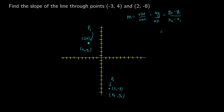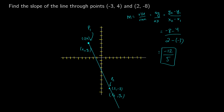Putting our values in: negative 8 minus 4 on top (using the second and first y values), and 2 minus negative 3 on the bottom. Doing the math, we get negative 12 on top and 5 on the bottom, so our slope is negative 12 over 5. Drawing a line through these two points, the slope is steep: for every 5 in the x-direction to the right, we go 12 down in the y-direction.